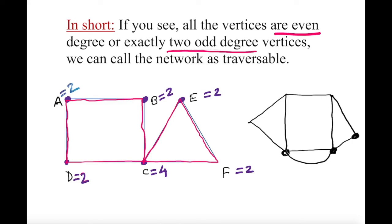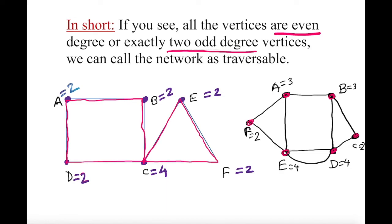Let me work out this next example. I have vertices A, B, C, D, E, F. The degrees are: A is three, B is three, C is three, D is two, E is four, F is four, and one more is two. So the degrees include some even and some odd values.